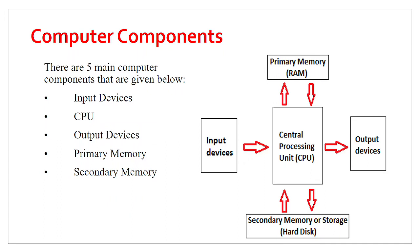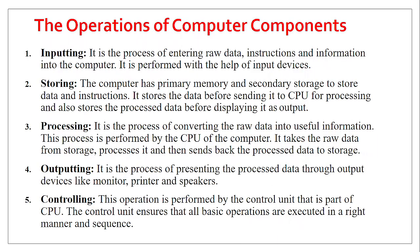The central processing unit has to process data. Where does it get this data? It has to get the data from the input devices. That's why input devices perform the function of sending instructions to the CPU, as the arrow indicates. The output devices receive instructions from the CPU — you can see the arrow pointing to the output device. Those are the main components of the computer.